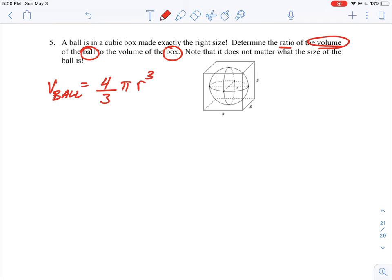Next thing we have to do is look at what is the volume of the box. Volume of the box is equal to just the length times the width times the height. Now because it's a cube, all sides are the same, so we can say that it is equal to the side cubed.